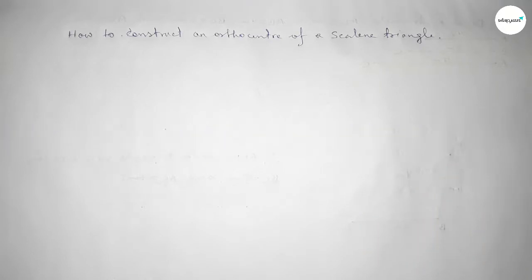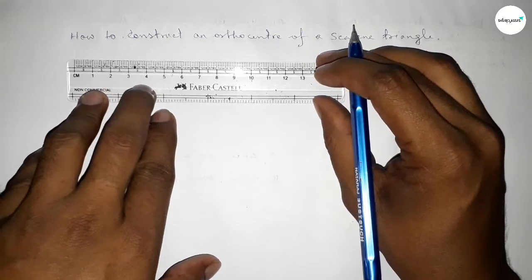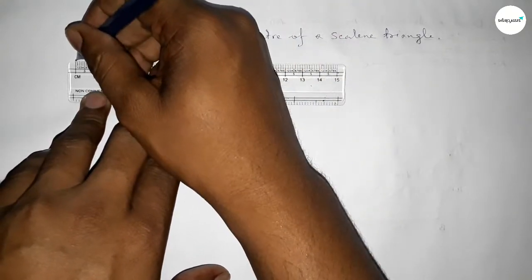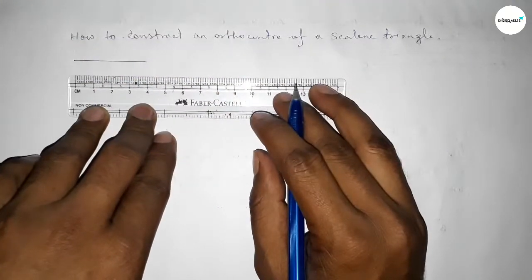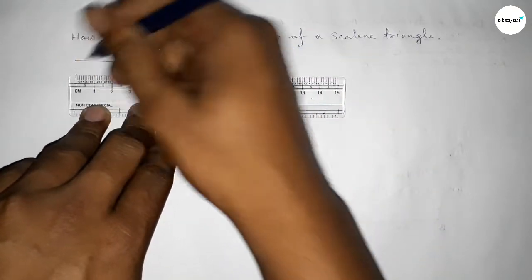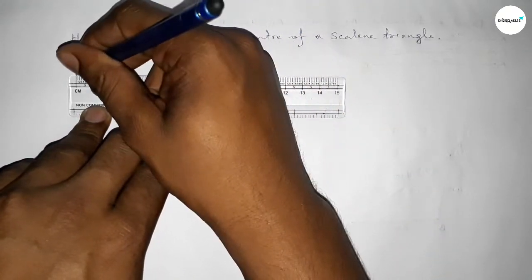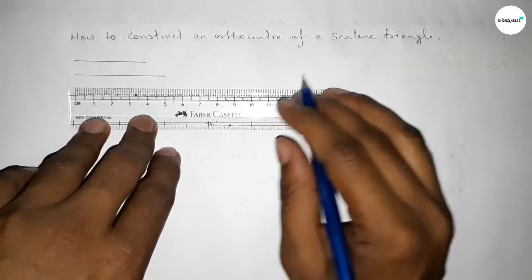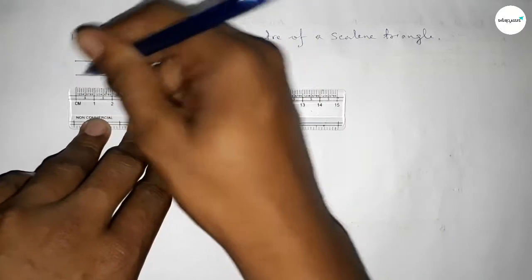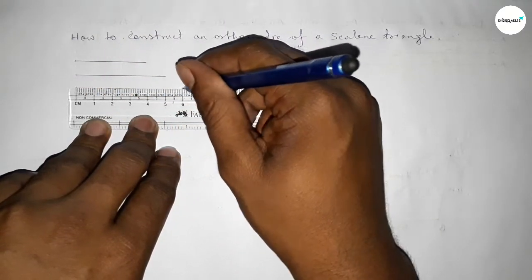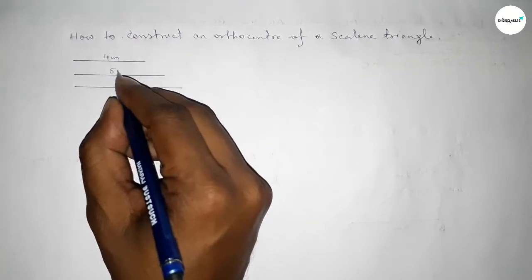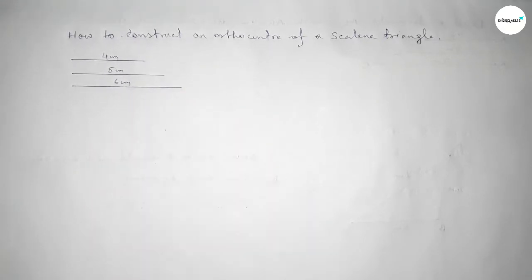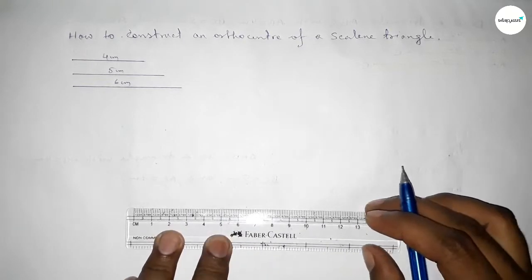First we have to draw a scalene triangle, so we take three sides. First taking a line of length four centimeters, then drawing another line of length five centimeters, then last taking a line of length six centimeters. So this gives us four centimeter, five centimeter, and six centimeter sides.